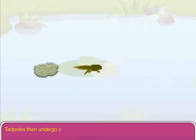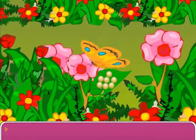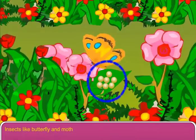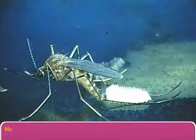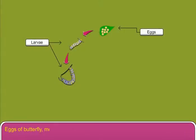Tadpoles then undergo certain changes to form the adult frog. Insects like butterfly and moth lay eggs on the leaf. Mosquitoes lay eggs in standing water. Eggs of butterfly, moth and mosquito first hatch into tiny larva.